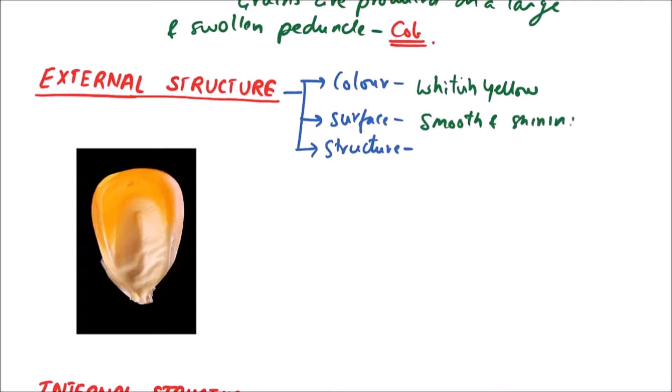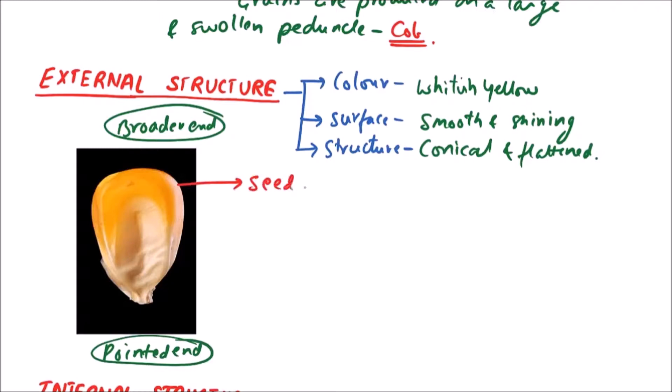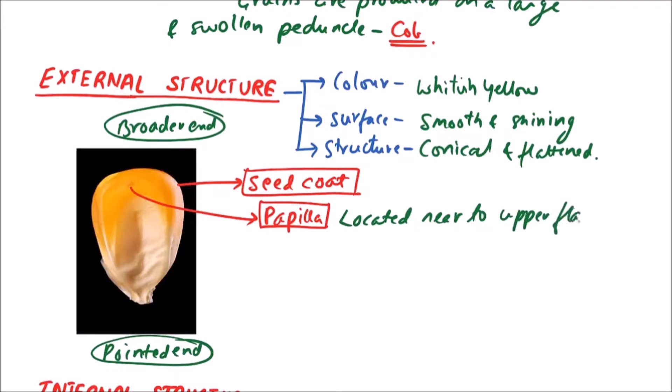This is the broader end of maize grain and this is the pointed end. We can observe the seed coat externally. Then this is papilla. Papilla is located near to the upper flat surface and it represents the remains of a style.